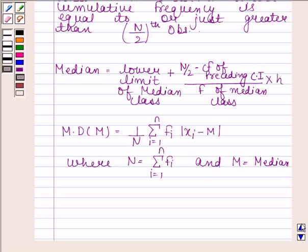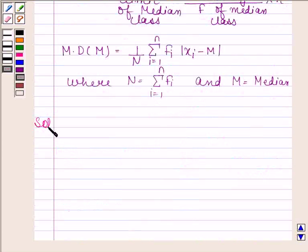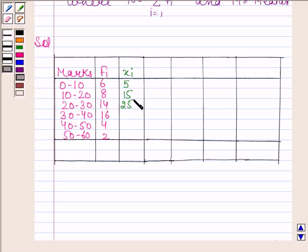Keeping all these steps in mind, let's now begin with the solution. We will first make a table. In the first two columns, we have written the given information. We will find the midpoint of each class interval. Midpoint of 0–10 is 5; midpoint of 10–20 is 15; 20–30 is 25; 30–40 is 35; 40–50 is 45; 50–60 is 55.